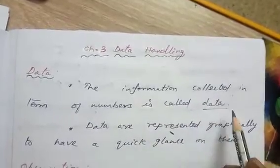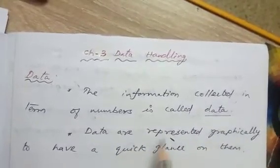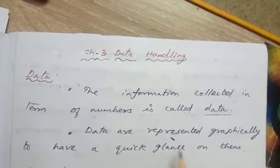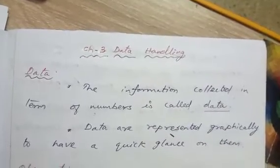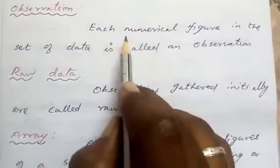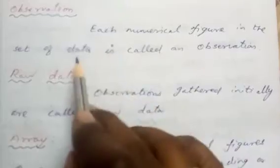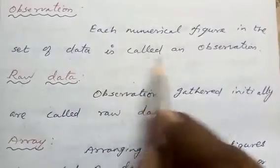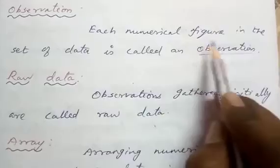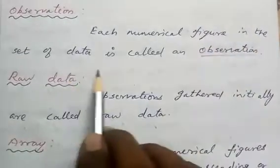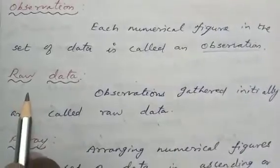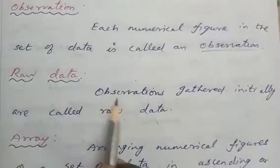Data are represented graphically to have a quick glance on them. The next one is observation — each numerical figure in the set of data is called an observation.